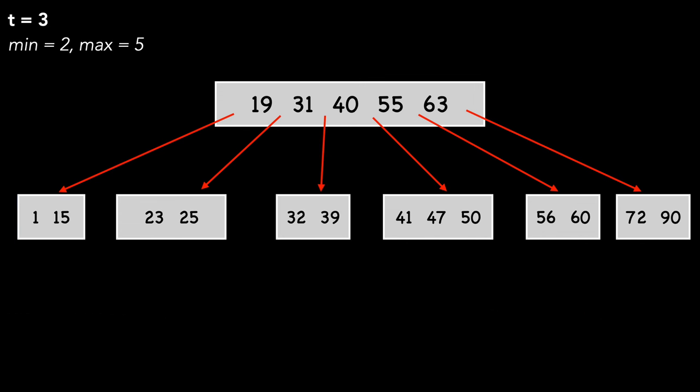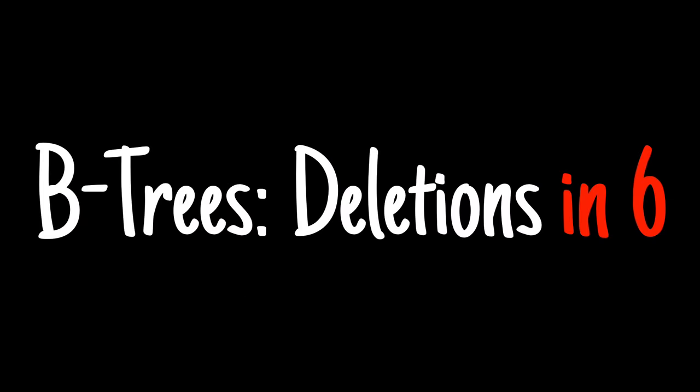That sums up our examples. It's worth noting that because of B-tree design, most keys will be in leaf nodes, and thus deletes will be simple. Thanks for watching. I hope this video helps you on your computer science journey. Please like and subscribe.